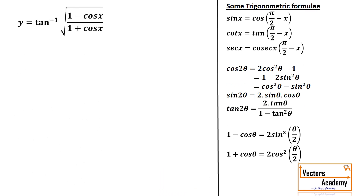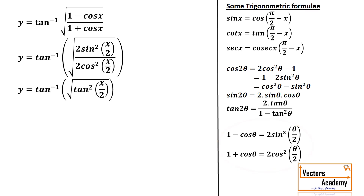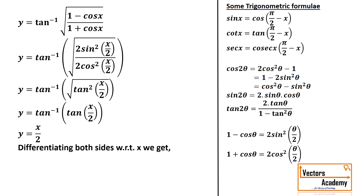The next question is y equal to tan inverse of the square root of (1 minus cos x) upon (1 plus cos x). The formulas for both 1 minus cos θ and 1 plus cos θ are known. Applying the formulas, 2 sin² upon cos² becomes tan², the square root of tan² is tan, then tan and tan inverse cancel, leaving x/2. Differentiating both sides, the derivative of y is equal to 1/2.